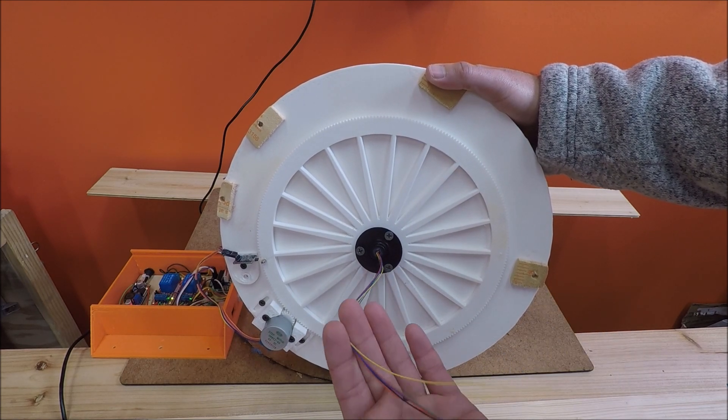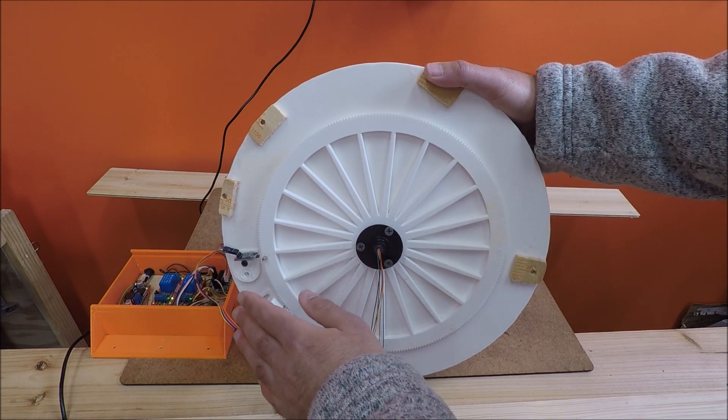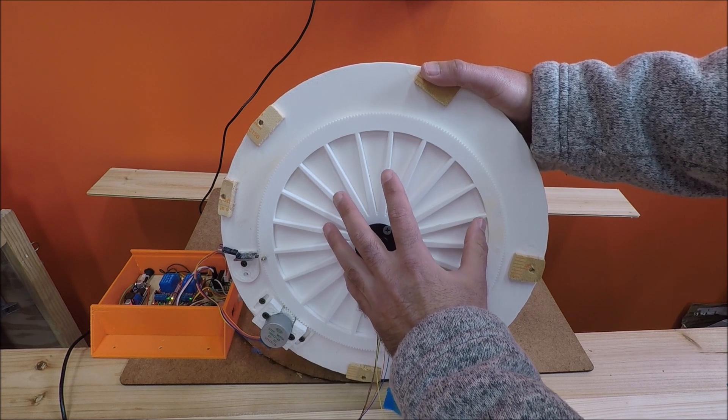Here you've got a slip ring and then you can run power to your tracks through this slip ring. So that's what we're looking at here as far as what the turntable has.